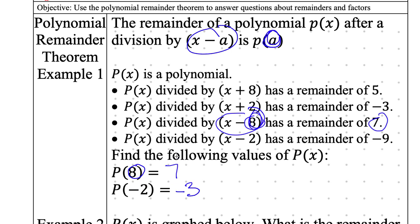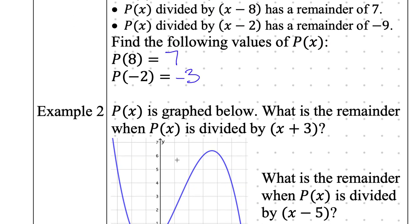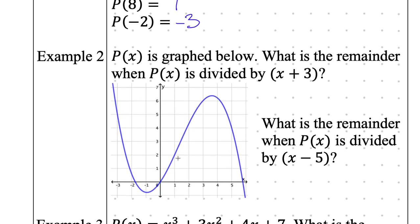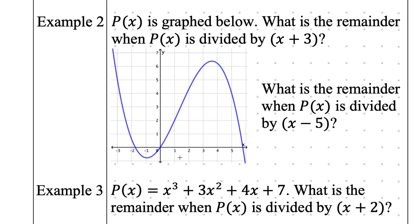Once you see a few more examples, hopefully it will be a little bit clearer. Let's see another version of the Polynomial Remainder Theorem. We have some polynomial graph below, and I want to know what is the remainder when I divide by x plus 3. So what value am I really plugging into the graph? If I'm dividing by x plus 3, what x coordinate am I looking at?